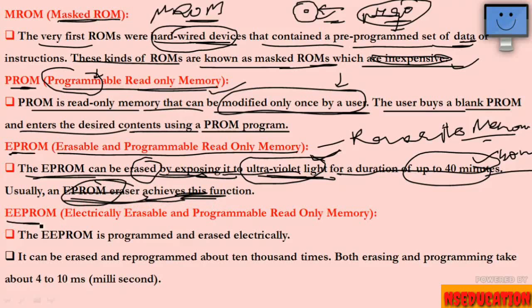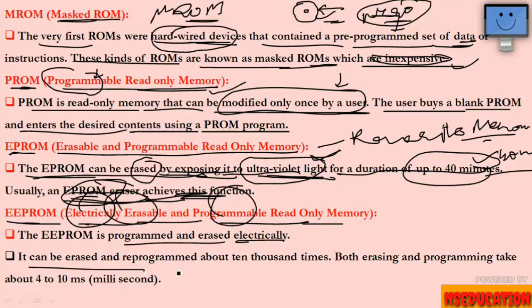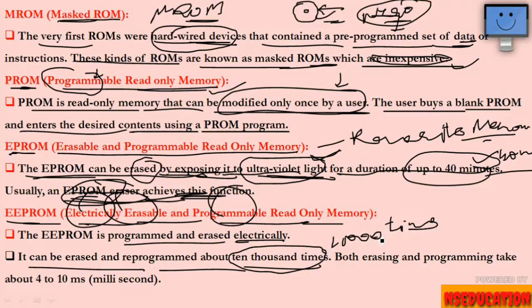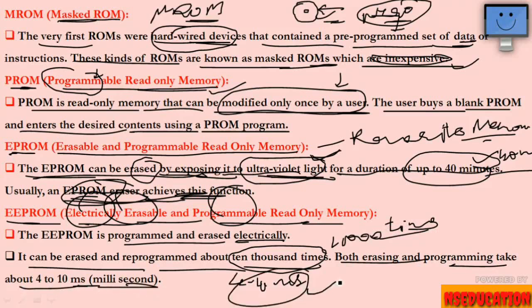Next is EEPROM — Electrically Erasable and Programmable Read-Only Memory. This can be erased and reprogrammed electrically. It can be erased and reprogrammed about 10,000 times. Both erasing and programming take about 4 to 10 milliseconds.